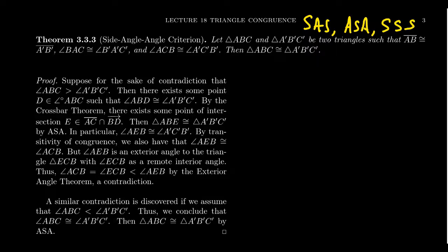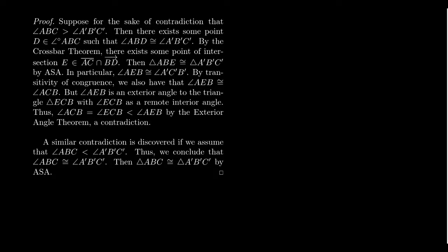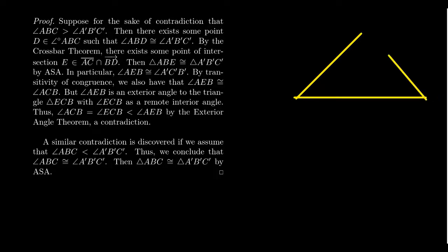Let's first make sure we understand the statement of the problem. We have two triangles ABC and A'B'C'. We assume that segment AB is congruent to segment A'B', that angle A is congruent to angle A', and that angle C is congruent to angle C'. Under those conditions we can then infer that triangle ABC is congruent to triangle A'B'C'. Let me sketch the picture as we work through this.